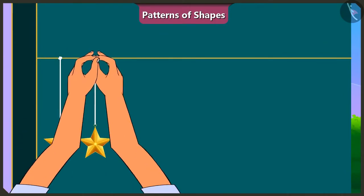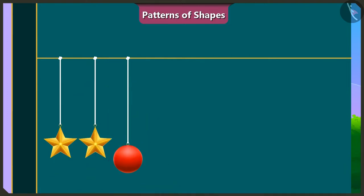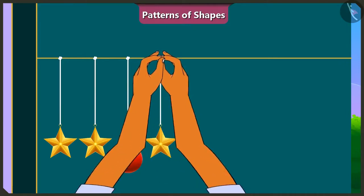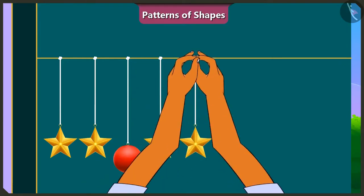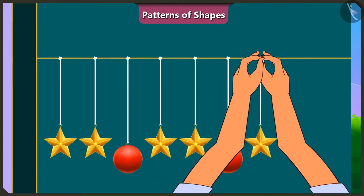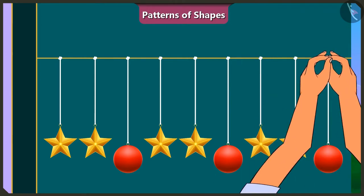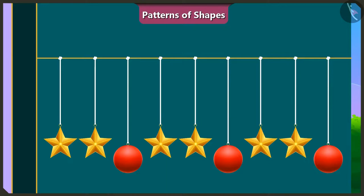Again, we can put two stars and a sphere on a strong thread like this. Yes. And then we can put two stars and a sphere like this again. And we can continue with this pattern. Yes. And now the toran is complete by repeating this special pattern. The pattern of this toran is really beautiful. Very good. Both of you have decorated the door beautifully.